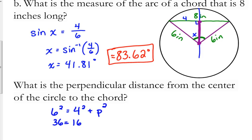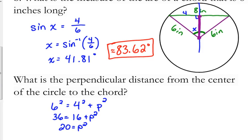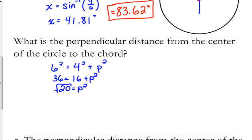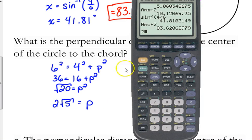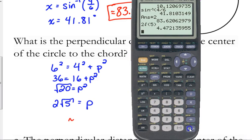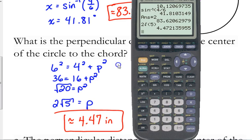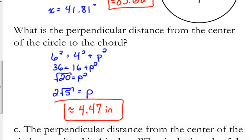So, 36 is equal to 16 plus P squared. 20 is P squared. Take the square root. Let's simplify that for a little while. That would be 2 square root of 5. Because 20 is 4 times 5. Square root of 4 is 2. 5 stays under. But, it would probably be more helpful to have the decimal value. 2 square root of 5. And, that distance is approximately 4.47 inches.